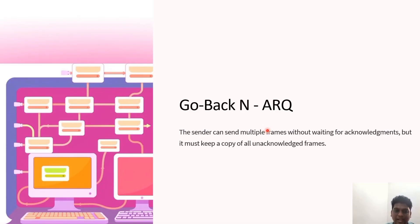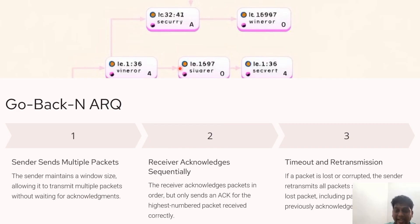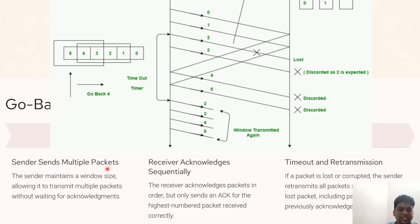The next type is Go-Back-N Automatic Repeat Request. Here the sender can send multiple frames without waiting for the acknowledgement, but it must keep a copy of all unacknowledged frames. The sender transmits a window of packets to the receiver. If the receiver detects an error in a packet, it sends a negative acknowledgement and asks the sender to retransmit that packet as well as all subsequent packets in the window. The sender retransmits the entire window of packets that were not correctly received.